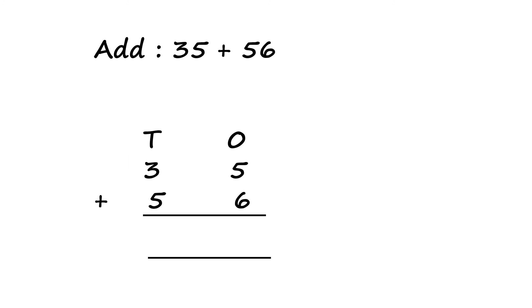35 plus 56. 5 will come to the 1's place. 3 will come to the 10's place. 6 will come to the 1's place. 5 will come to the 10's place. Now let us add 5 plus 6. 5 plus 6 gives me 11. So 1 I will write here. And 1 will come here.